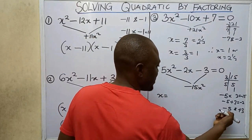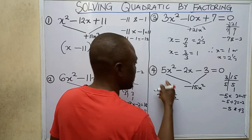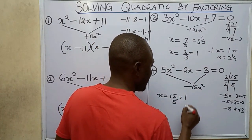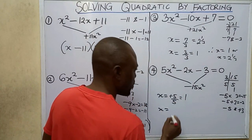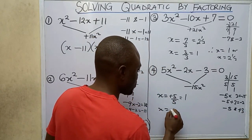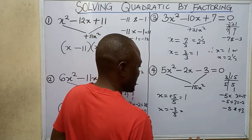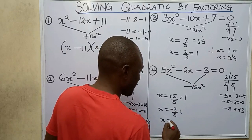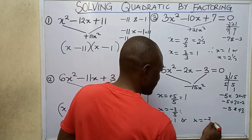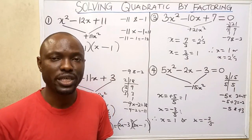I go straight to finding x. My factor is negative 5, so I change it to positive 5 divided by the leading coefficient 5 — that gives 1. My other factor is plus 3, so I change it to minus 3 divided by the leading coefficient 5 — that gives minus 3 over 5. Therefore x equals 1 or x equals negative 3 over 5. Thanks for watching.